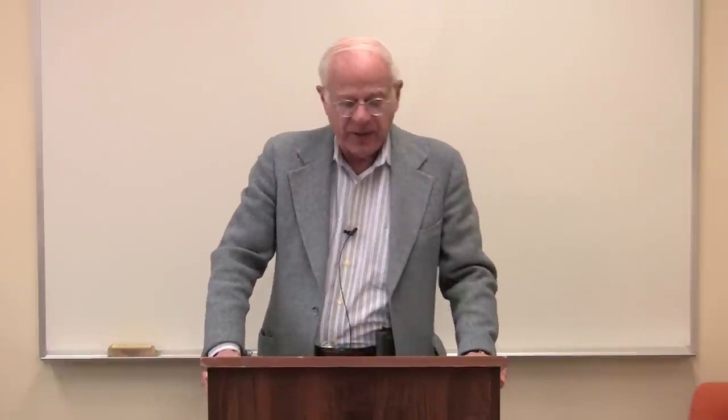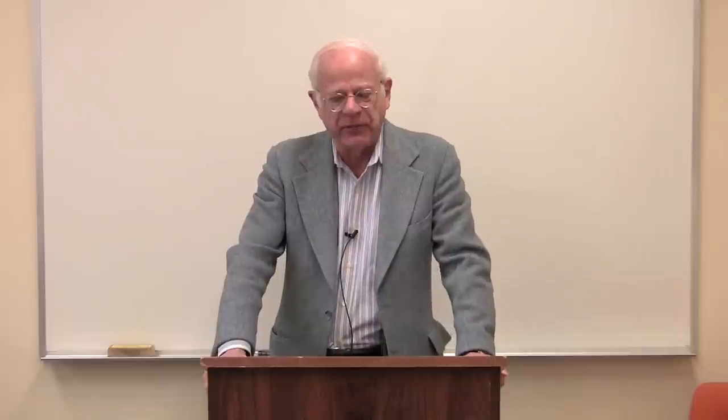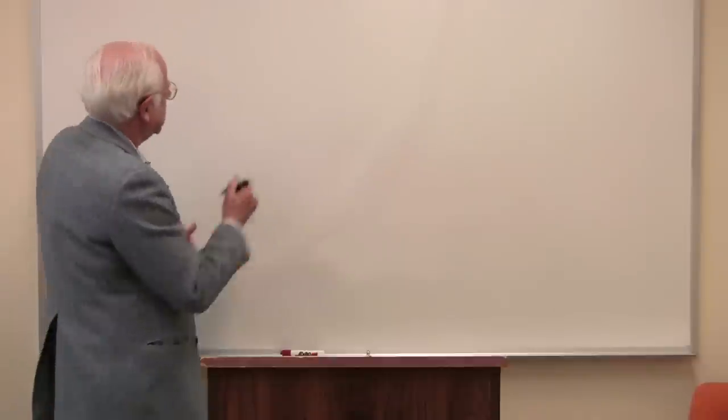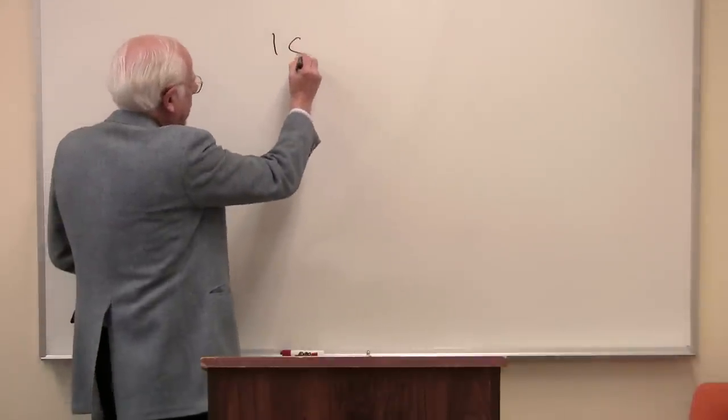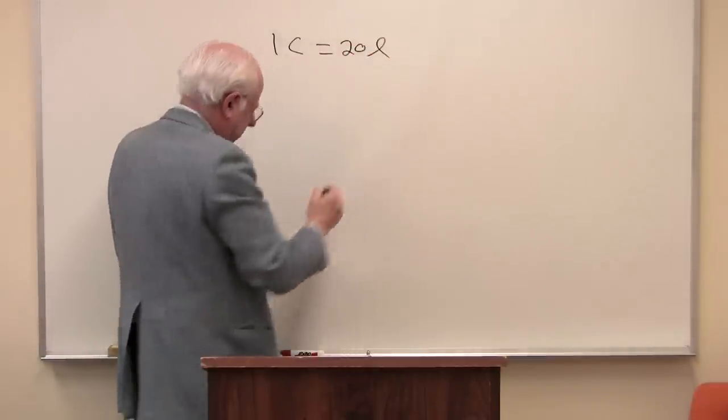Marx begins by discussing the relationship between different kinds of commodities. He discusses, as you will read, one coat equals 20 yards of linen. Let me put that on the whiteboard here: one coat equals 20 yards of linen.